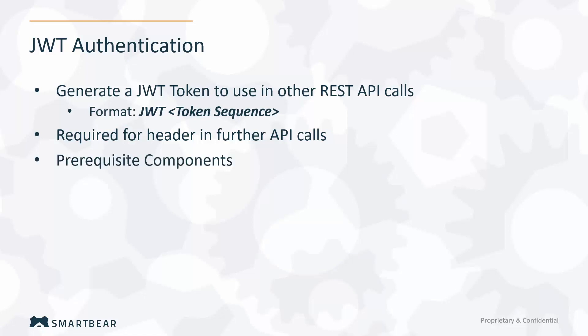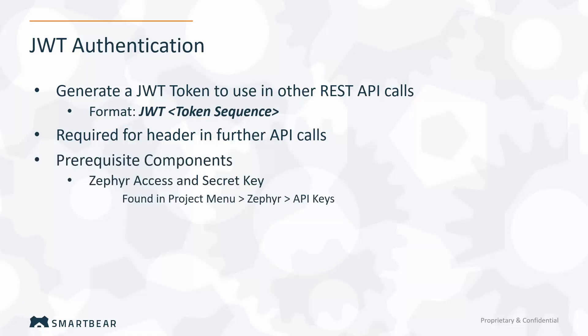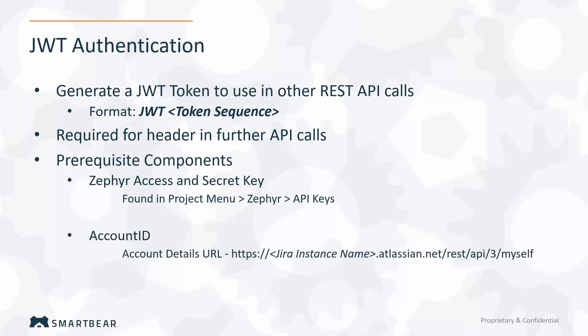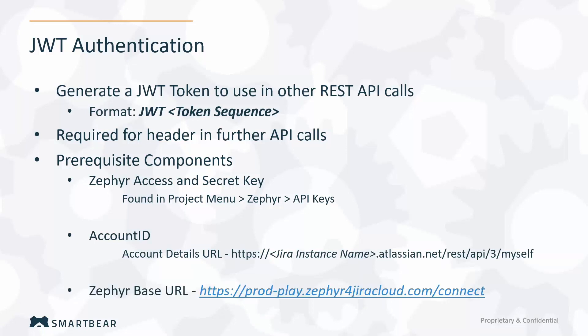The prerequisite components include the Zephyr access and secret key, the account ID — which you can find at a specific URL listed here — and the Zephyr base URL, which for Jira Cloud remains the same for everyone. Let's go into Jira and actually find out how to locate these different pieces so that we can authenticate into our REST API.